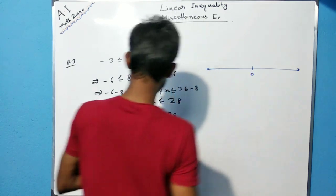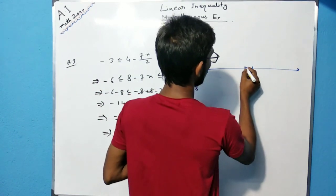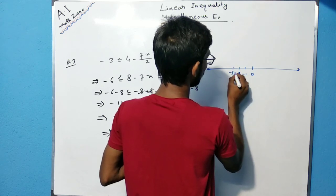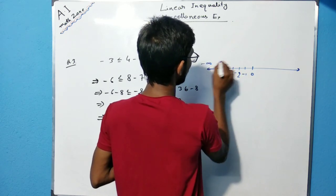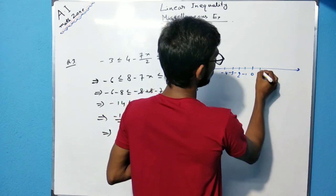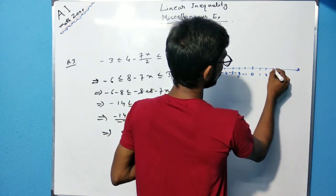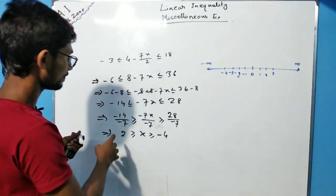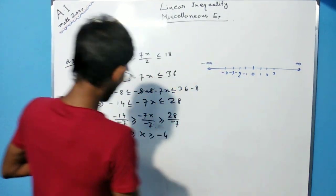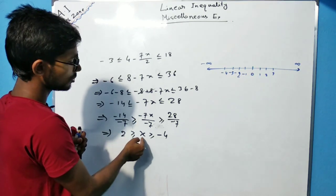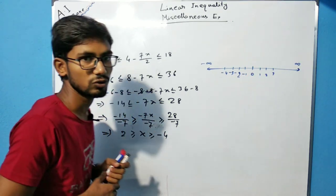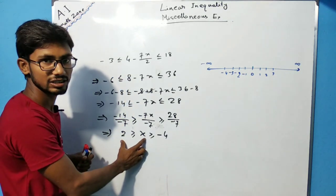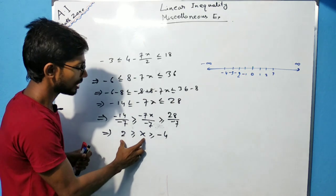Suppose this is 0, and to the left: minus 1, minus 2, minus 3, minus 4 and up to minus infinity; to the right: 1, 2, 3 and up to infinity. Now, 2 is greater than or equals to x, greater than or equals to minus 4 — this is the range for this inequality. So this is the graph.